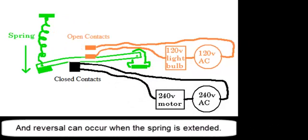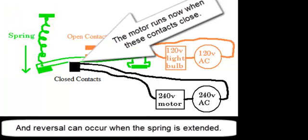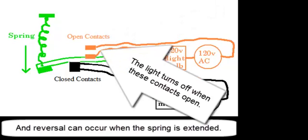A reversal can occur when the spring is extended. The motor runs now when these contacts close. The light turns off when these contacts open.